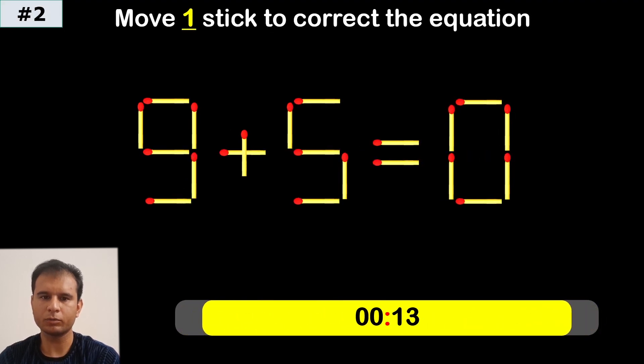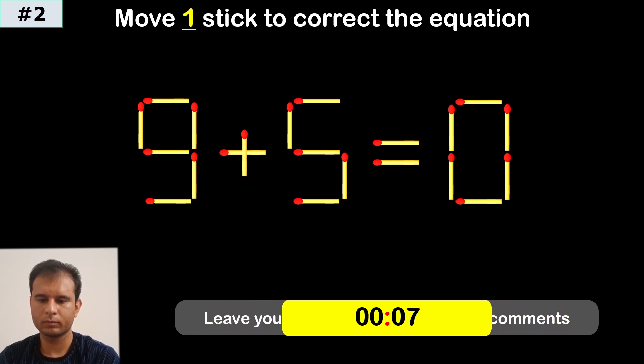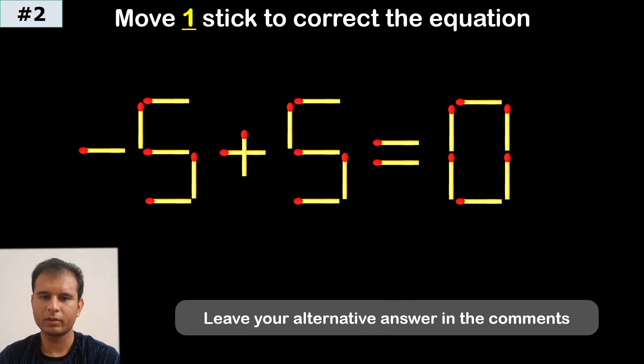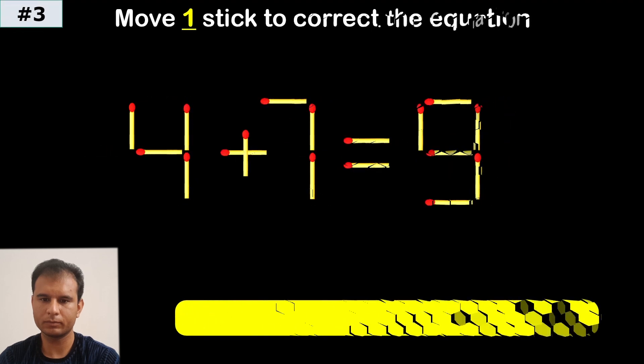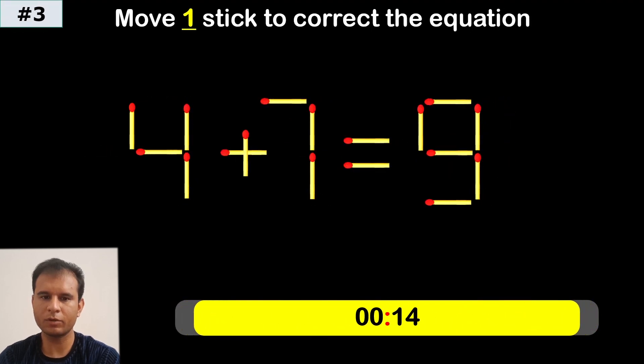Puzzle number 2. Negative 5 plus 5 equals zero. Puzzle number 3.